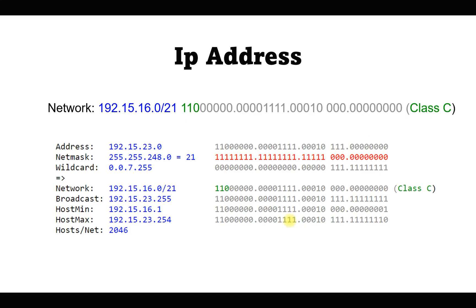I'll show you a calculator that helps you calculate IP addresses from a subnet. You just need to provide the range — like 192.15.16.0/21 — and you will get the first address, which is the network identification, and the last address, which is the broadcast address. These first and last IPs cannot be used from any subnet: one is used for network identification and the other for broadcast. The subnet mask is also shown, and you can see it in binary on the right-hand side.